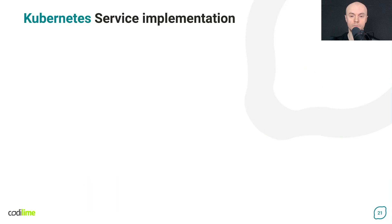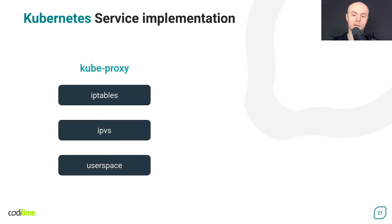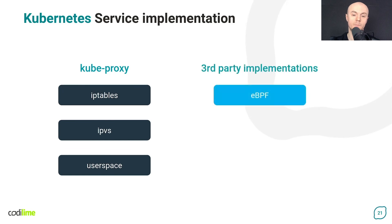To conclude, in this video I have shown how services in Kubernetes work and how they can be implemented. The default implementation is kube-proxy, which can run in three modes — iptables, IPVS, and user space — and each of them has been briefly discussed. It is also worth mentioning that kube-proxy is not the only way to implement services in Kubernetes. For example, some third-party solutions make it possible to use eBPF technology for this purpose as a full alternative to kube-proxy or a coexisting solution.